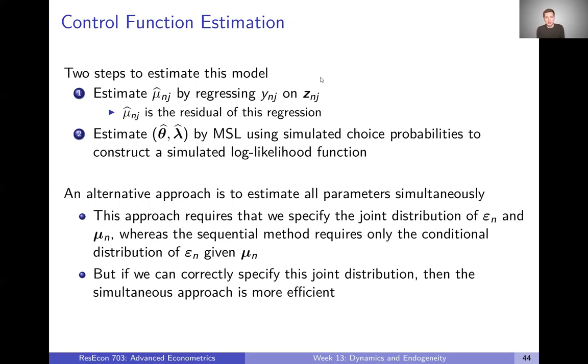If we look back to the model we wrote down, mu is just the residual from that kind of regression. Once we have those mu hats, our estimated mu's, we can now construct the choice probabilities we talked about. We can simulate those choice probabilities and use them within a maximum simulated likelihood framework to estimate our theta hats and lambda hats that get us the parameters of the model.